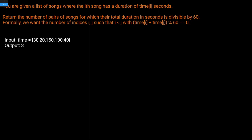Let's look at an example. If we were given time equals [30, 20, 150, 100, 40], what should we return? The answer is 3. The first pair is 30 plus 150, which gives us 180. When divided modulo 60, that gives us zero.